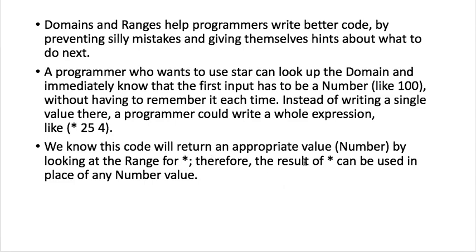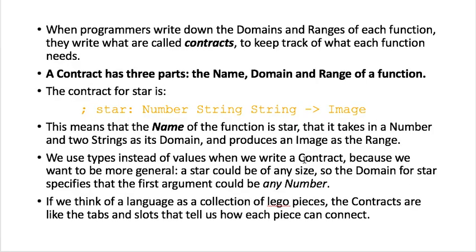Yep, so that's what this one says, is that any result of a times can be used as for a number value. So when we write down the domains and ranges of a function, we call it a contract. So that way we can keep track of what the domains and ranges and names of a function are.